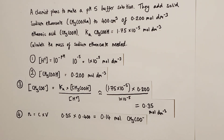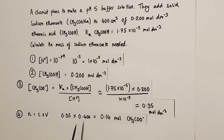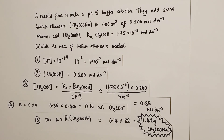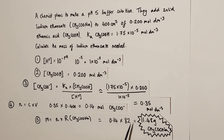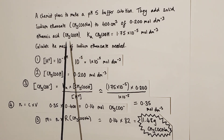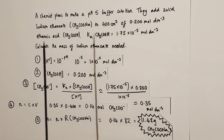To find the mass of salt required, we first convert the concentration of ethanoate ions to moles: moles = 0.35 × 0.4 (400 ÷ 1000 L) = 0.14 moles of ethanoate ions. Then mass = moles × relative formula mass of sodium ethanoate = 0.14 × 82 = 11.48 grams of sodium ethanoate needed to dissolve into the ethanoic acid to form a buffer solution with a pH of 5.